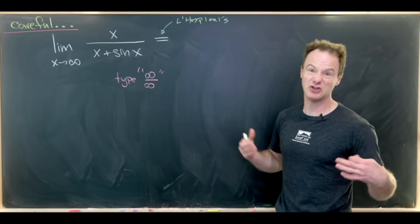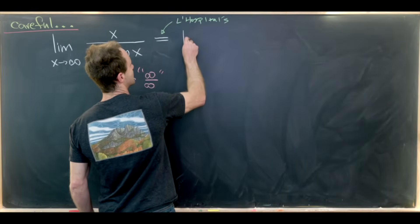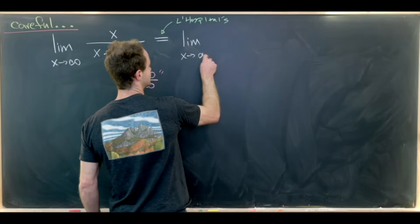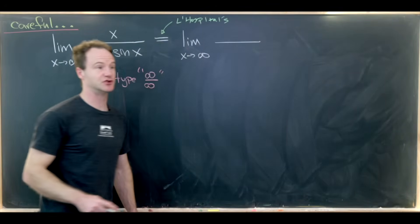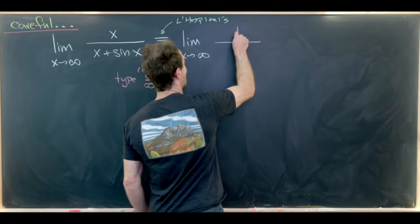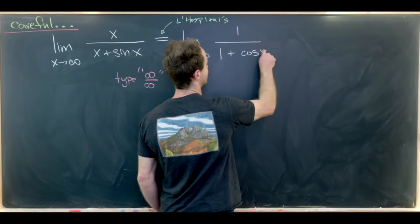But let's do this for the sake of argument. In order to apply L'Hopital's rule we'll take the limit as x goes to infinity, then we'll do the derivative of the numerator over the derivative of the denominator. That will give me 1 over 1 plus cosine of x.